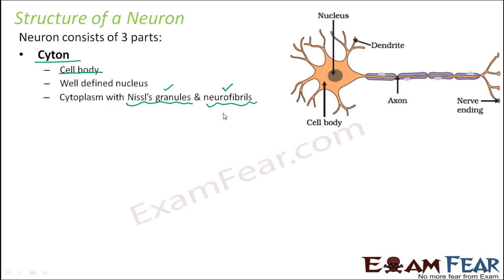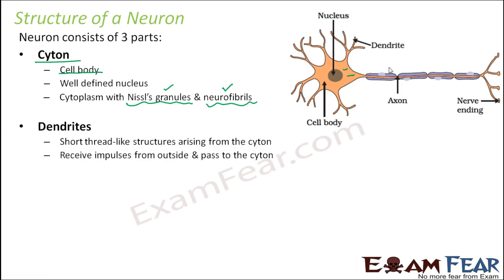Neurofibrils are thin fiber-like or thread-like structures which run through the cytoplasm and also extend into the axon and dendrites. These thin hair-like structures are present even in dendrites and axons.